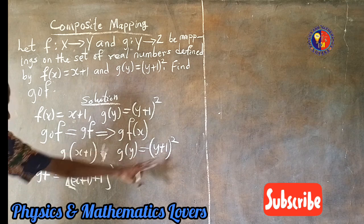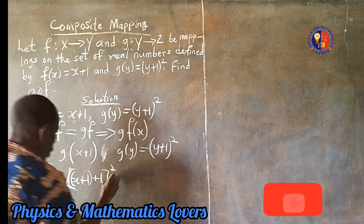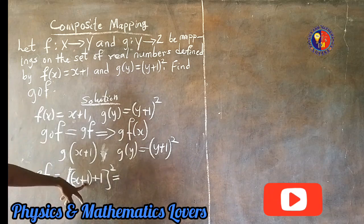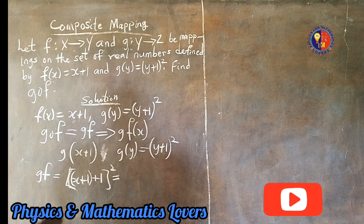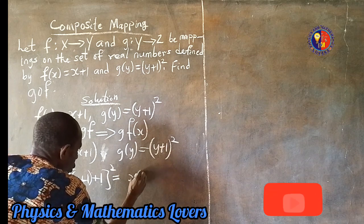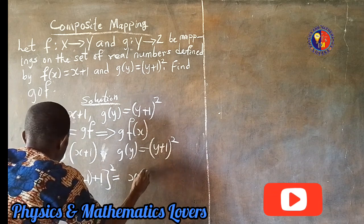Then, this original one that is already there, then you break it down. So at the end of the day, we're going to open the brackets. Opening this inner bracket, we're going to have 1 plus 1 here, which means we're going to have x plus 2.